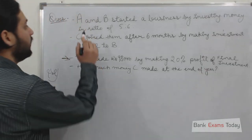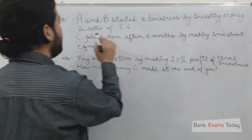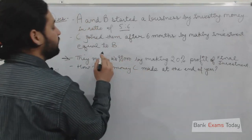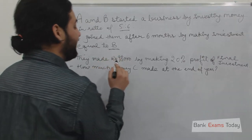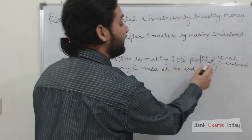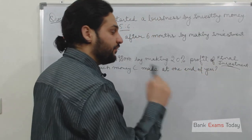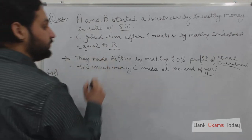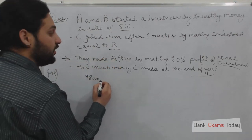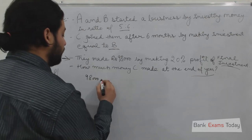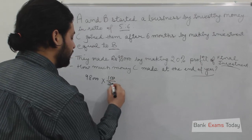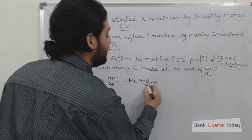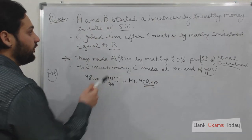Let's do another important question. A and B started a business by investing money in the ratio of 5 to 6. C joined them after 6 months by making an investment equal to B. They made 98,000 rupees by making 20% profit of the final investment. Final investment is the investment at the end of the year. The final investment would be 100 divided by 20 multiplied by 98,000, which equals rupees 4,90,000. So 4,90,000 is the final investment at the end of the year of all the partners.